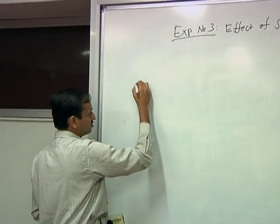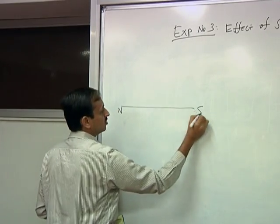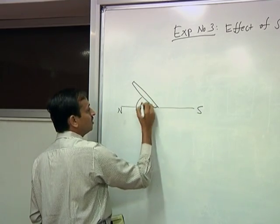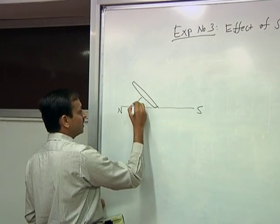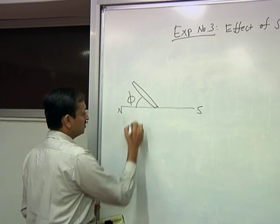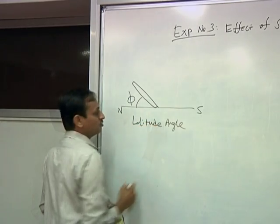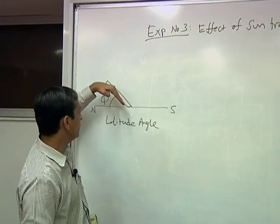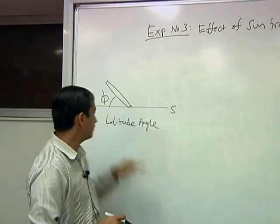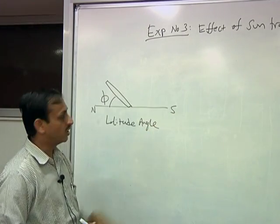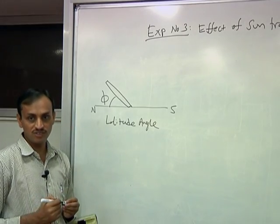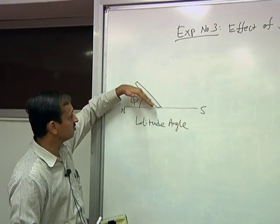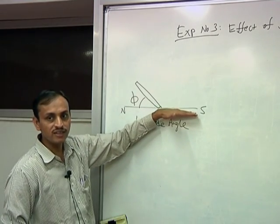Normally, PV modules are installed such that they are south-facing and the angle of the PV module is equal to the latitude angle of the location. So if you are in Mumbai, the latitude angle is 19 degrees, therefore the PV module should be inclined at 19 degrees with respect to the horizontal surface and the face of the module should be in the south direction. This is the optimized fixed condition.